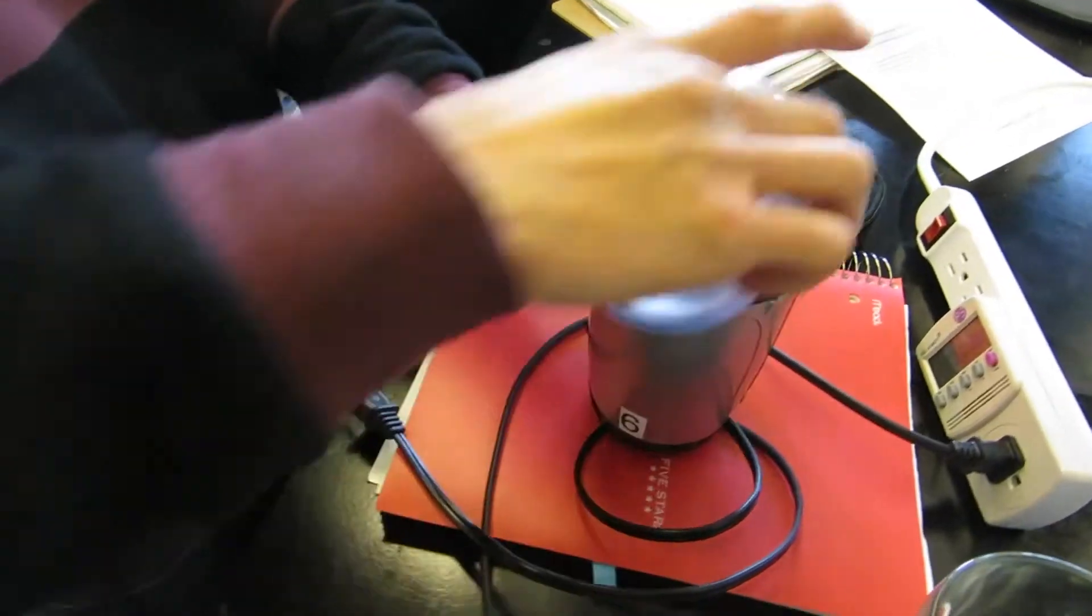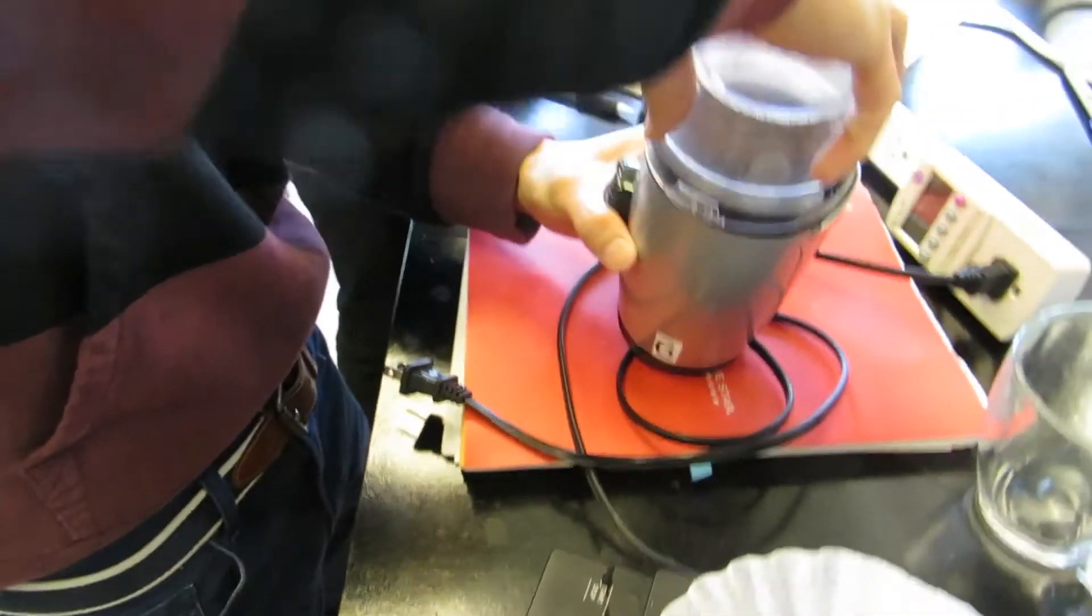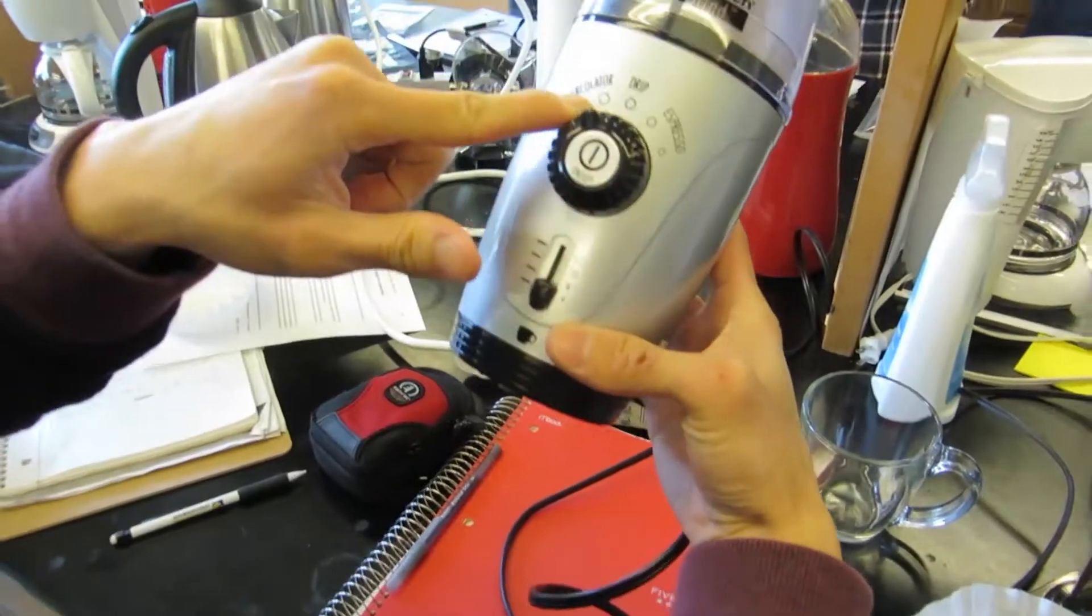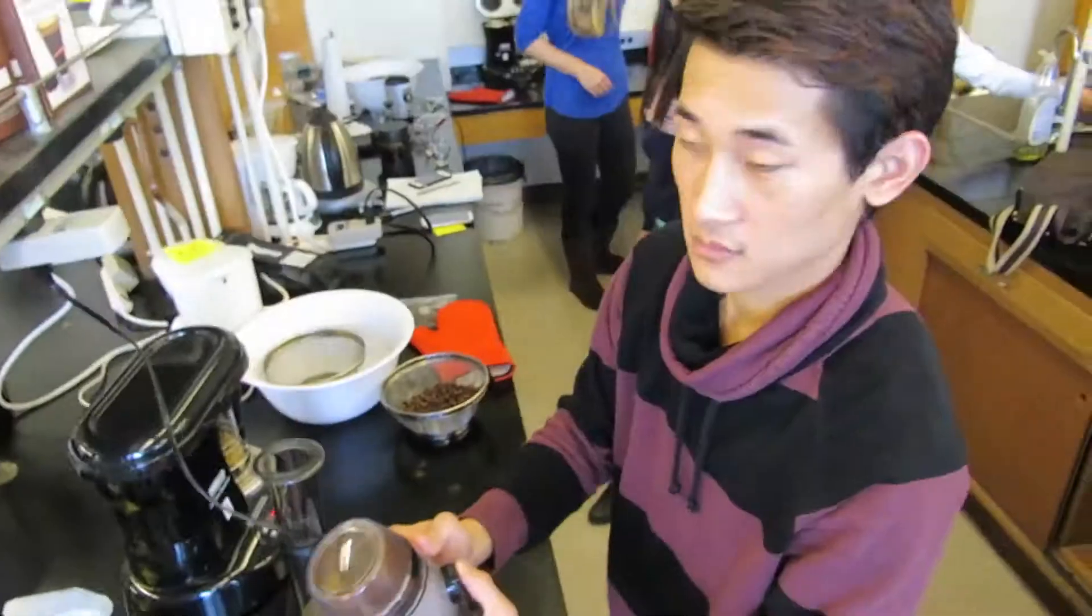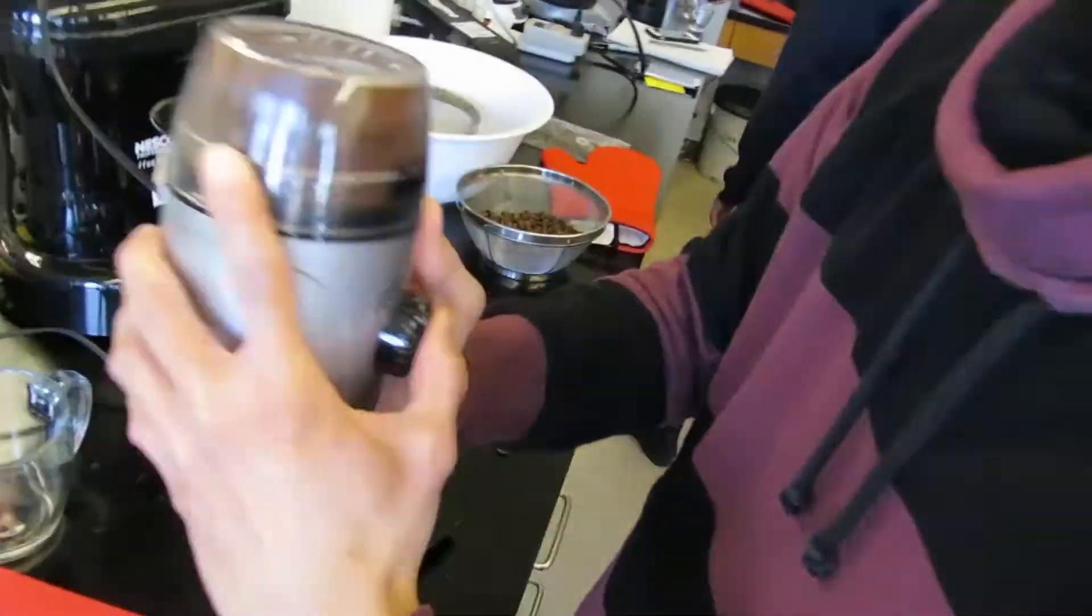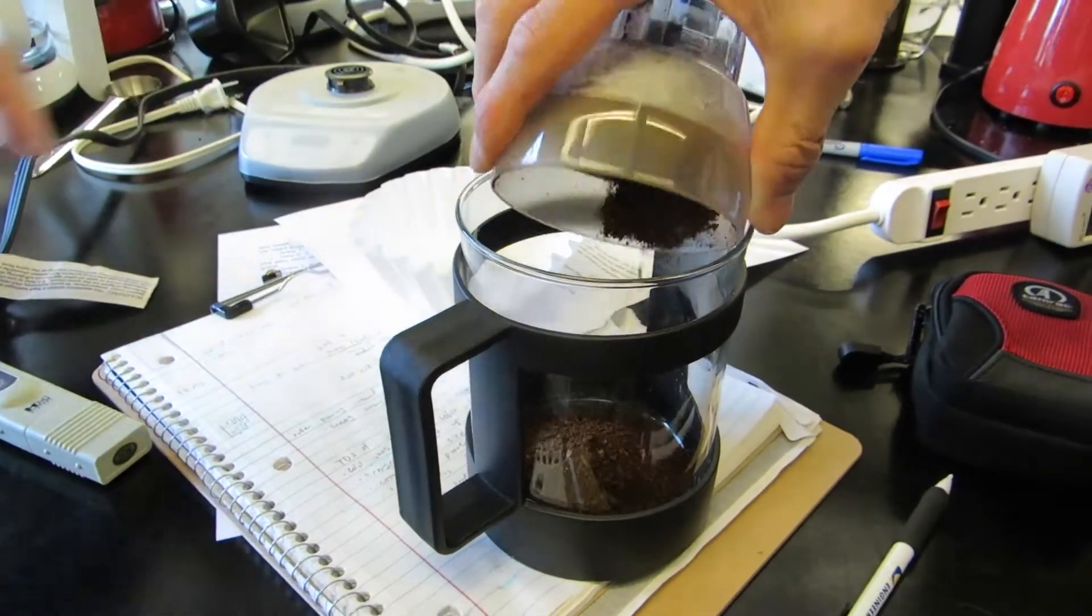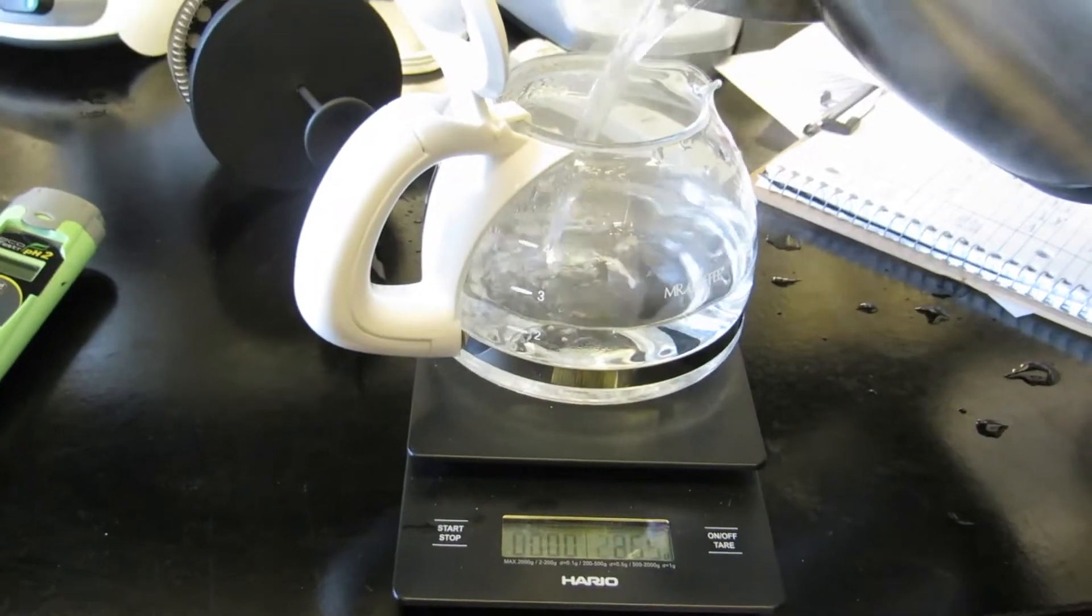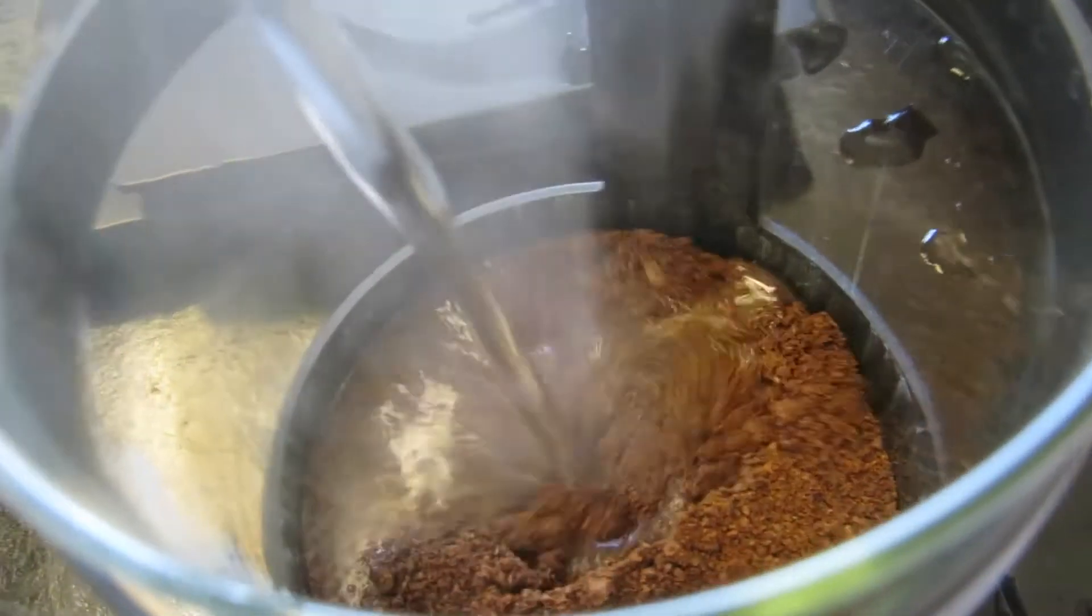We decided to use a fairly coarse grind size. We used the French press because it uses no electricity. Additionally, we think the oil is very important for the flavor. In order to know exactly what amount of beans and water we put in, we weighed our water beforehand and found that we used a ratio of roughly 1 gram of beans to 18.5 grams of water.